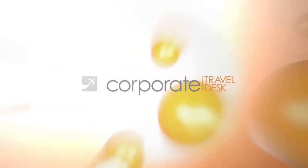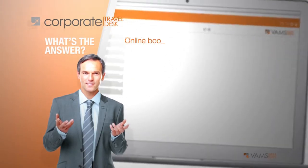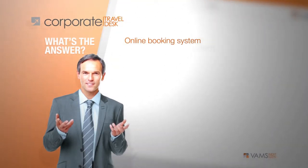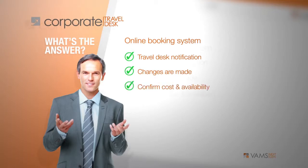So what's the answer? We could use a system that allows the user to enter and confirm their travel request form online, then notifies the travel desk that the request is waiting. The travel desk reviews and confirms the travel after applying changes that improve the travel experience while staying within company policy. At this point the system confirms availability and cost with each service provider involved.